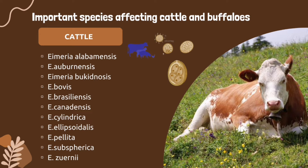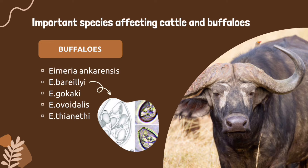The important species affecting cattle include: Eimeria alabamensis, an intranuclear parasite of intestinal epithelium cells; Eimeria auburnensis; Eimeria bovis, the commonest and second most pathogenic species with giant schizonts in the small intestine; Eimeria brasiliensis; Eimeria canadensis; Eimeria cylindrica; Eimeria ellipsoidalis; Eimeria pellita; Eimeria subspherica, the smallest species; and Eimeria zuernii, the most pathogenic.